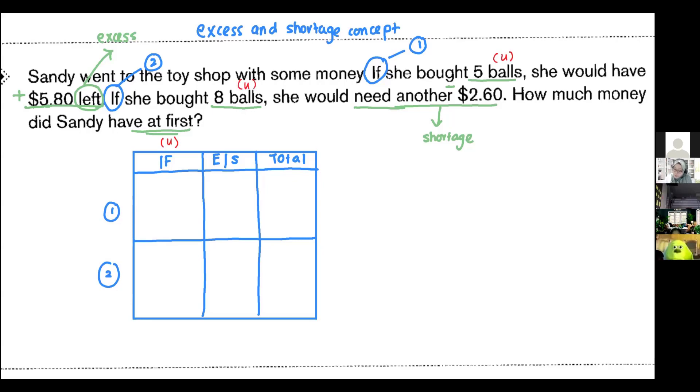So in this first if, she bought five units of the balls. And then she have excess of $5.80. So that will be plus $5.80.